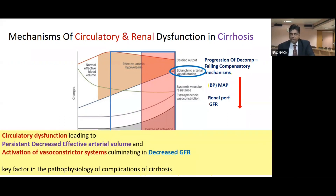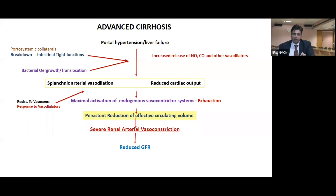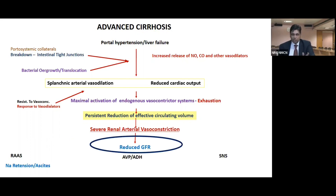So in fact, it is not the liver but circulatory dysfunction — leading to persistent decreased effective arterial volume with activation of vasoconstrictors — which culminates in decreased GFR. Progression of cirrhosis and portal hypertension leads to splanchnic arterial vasodilatation with activation of endogenous vasoconstrictor systems. Prolonged activation causes exhaustion with reduced cardiac output and failure of compensatory mechanisms, leading to an effective state of hypovolemia, causing severe renal arterial vasoconstriction, reduced GFR, worsening ascites, tubular water reabsorption, inappropriate free water retention, and dilutional hypervolemic hyponatremia.